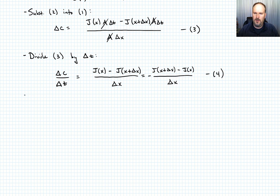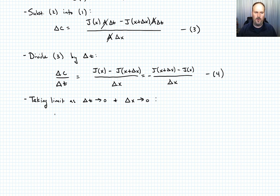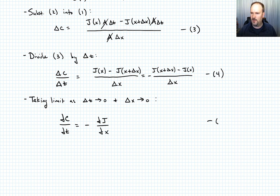Now we take the limit as delta t goes to zero and delta x goes to zero. As delta t goes to zero, delta C turns into a derivative, and the right-hand side is the definition of a derivative. So we end up with: the partial of C with respect to t equals negative the partial of J with respect to x. Call that Equation 5.